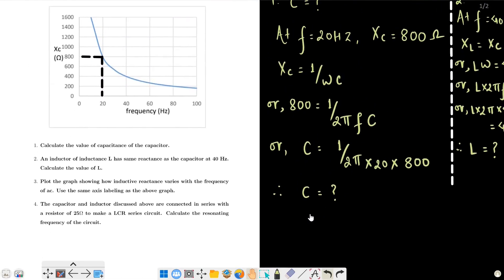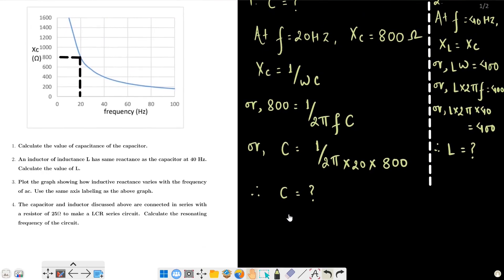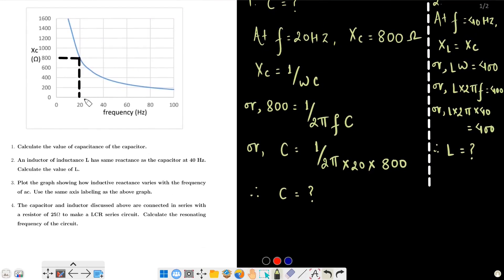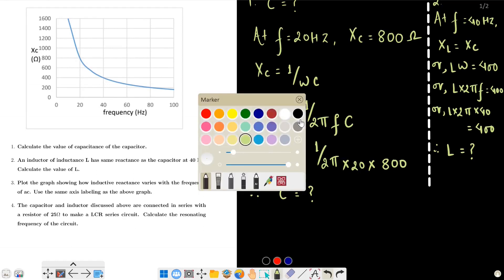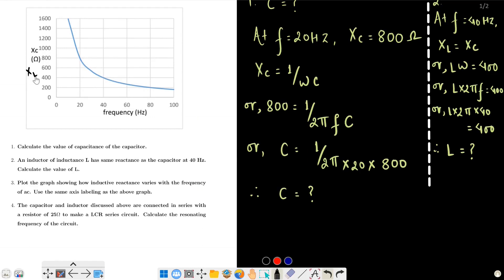Third question: plot the graph showing how inductive reactance varies with frequency of AC using the same axis labeling as above graph. So on the graph, frequency on X axis and inductive reactance on Y axis. At 40 Hz, X_L reactance is at this point.